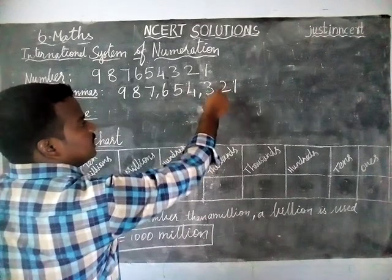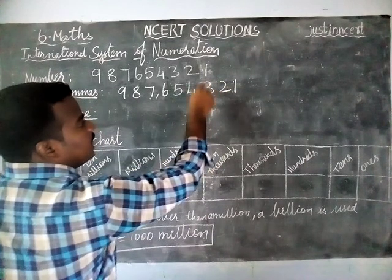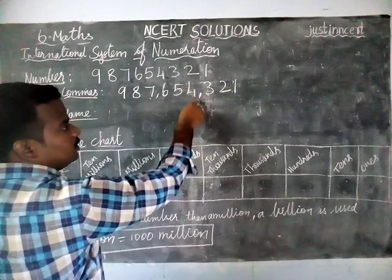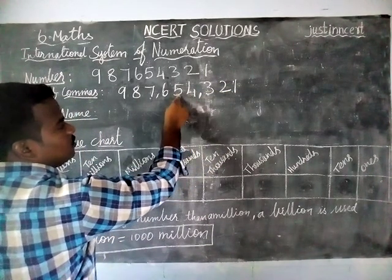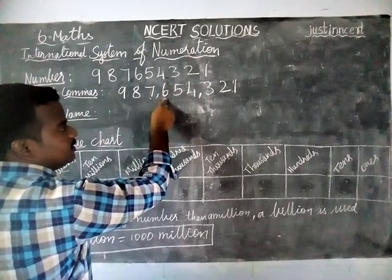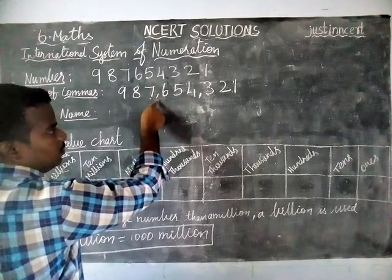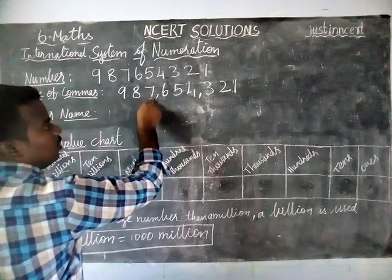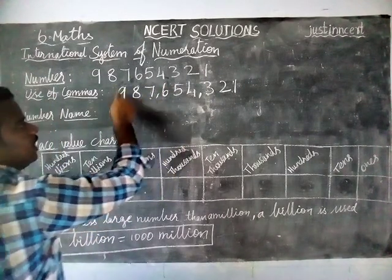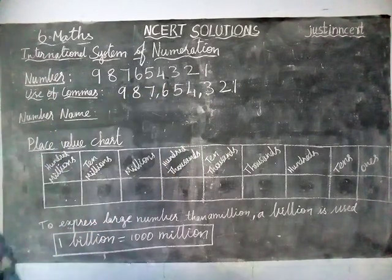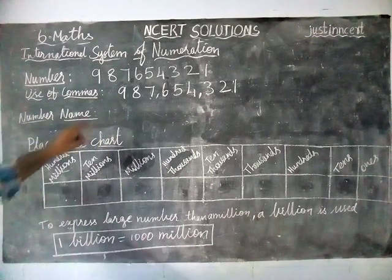Ones, tens, hundreds — comma — thousands, ten thousands, hundred thousands — comma — one million, ten million, hundred million.